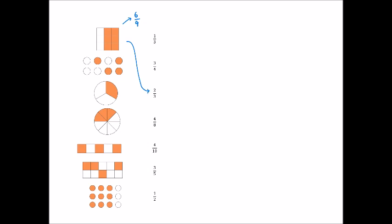We'll now consider the second diagram. In this diagram we have four circles out of a possible eight shaded, so we could say that's equal to four eighths. But actually we could consider this in a slightly different way — one out of every pair of circles, one out of every two, is shaded, and so we could actually match this with the fraction one half. We'll consider why this representation has two matching fractions in a moment.